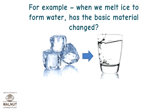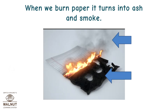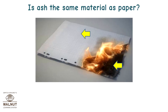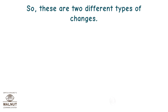For example, when we melt ice to form water, has the basic material changed? No — it's still water, though it appears different. When we burn paper, it turns into ash and smoke. Is ash the same material as paper? No — a different material is formed. So these are two different types of changes.